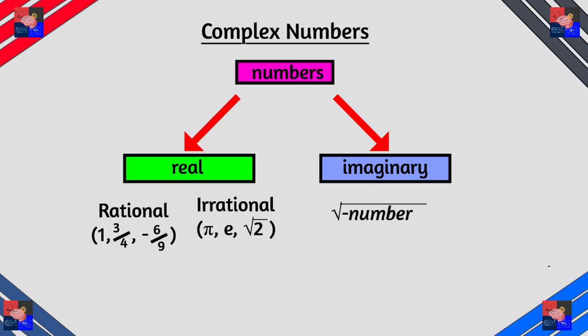These are the square roots of numbers that are negative. Now these are imaginary because no number can really square to give a negative number. Not even negative numbers because if you multiply a negative number by a negative number then you get a positive number.